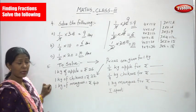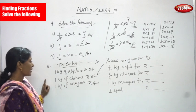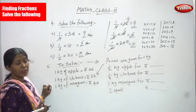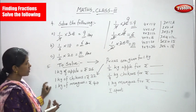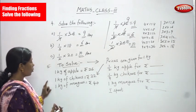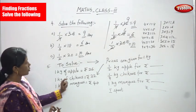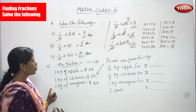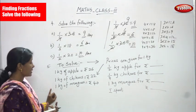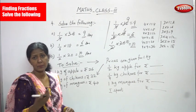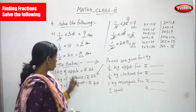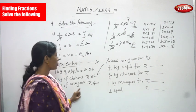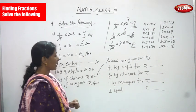1 kg of chikus — chikus is sapota fruit — is rupees 32, and 1 kg of mangoes is rupees 40.